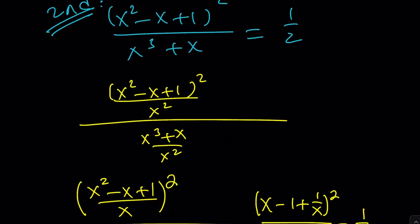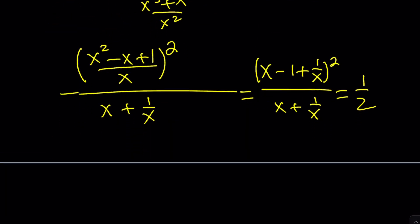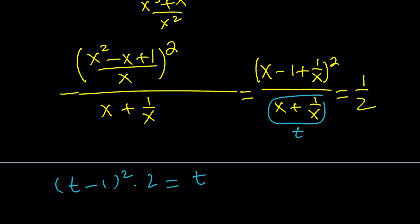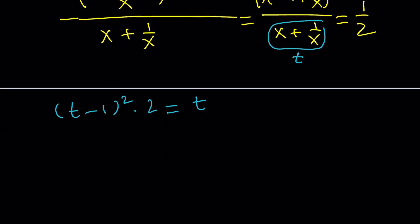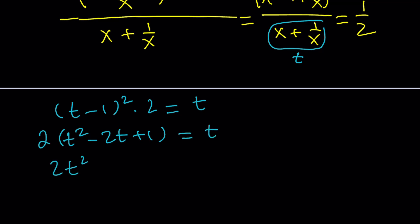We're going to use substitution again. Let's call t equal to x plus 1 over x. Then we get t minus 1 squared times 2 equals t. Expanding: t squared minus 2t plus 1, times 2, equals t. Distributing gives 2t squared minus 5t plus 2 equals 0.